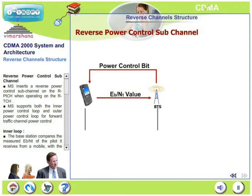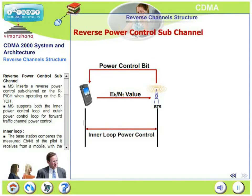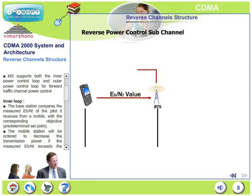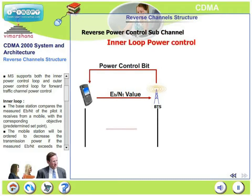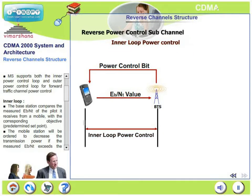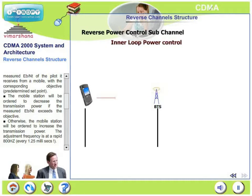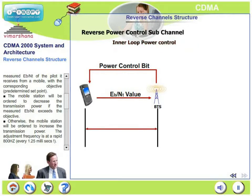Let's talk about the reverse power control sub-channel. The mobile inserts a reverse power control sub-channel on the pilot channel when operating on the reverse traffic channel. The mobile supports both the inner power control loop and the outer power control loop for forward traffic channel power control. In the inner loop, the base station compares the measured Eb/Nt of the pilot it receives from the mobile with a predetermined set point. Eb is bit energy; Nt is noise, so Eb/Nt is analogous to a signal-to-noise ratio.